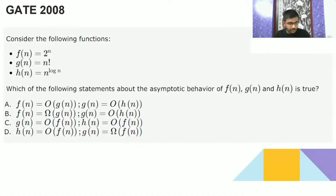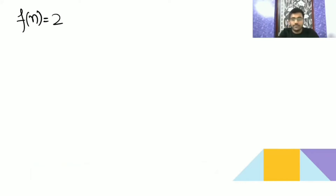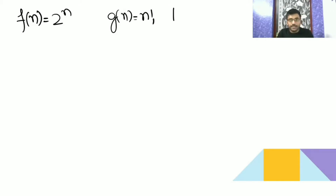Try this and tell me what is going to be the answer. Fn is equal to 2 to the power n, Gn is equal to n factorial, and Hn is equal to n to the power log n.